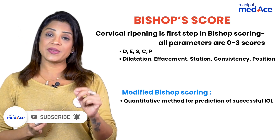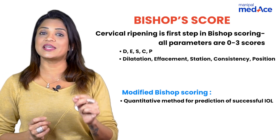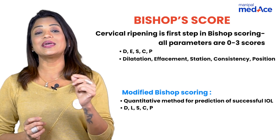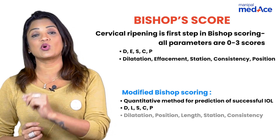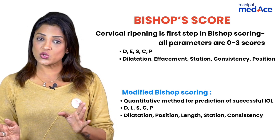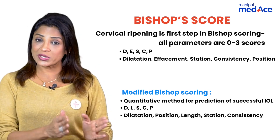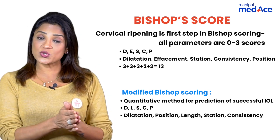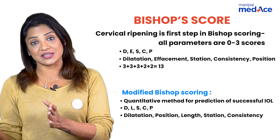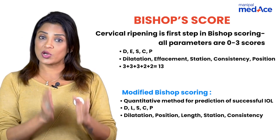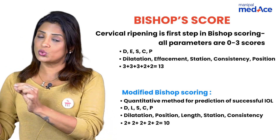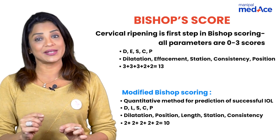When effacement is replaced by L, that is the length of the cervix, it becomes DLSCP — that is modified Bishop's score. The difference between the two is that the total score in Bishop's score is 3+3+3+2+2, that is 13. In modified Bishop's score, it is 2+2+2+2+2, totalling 10.